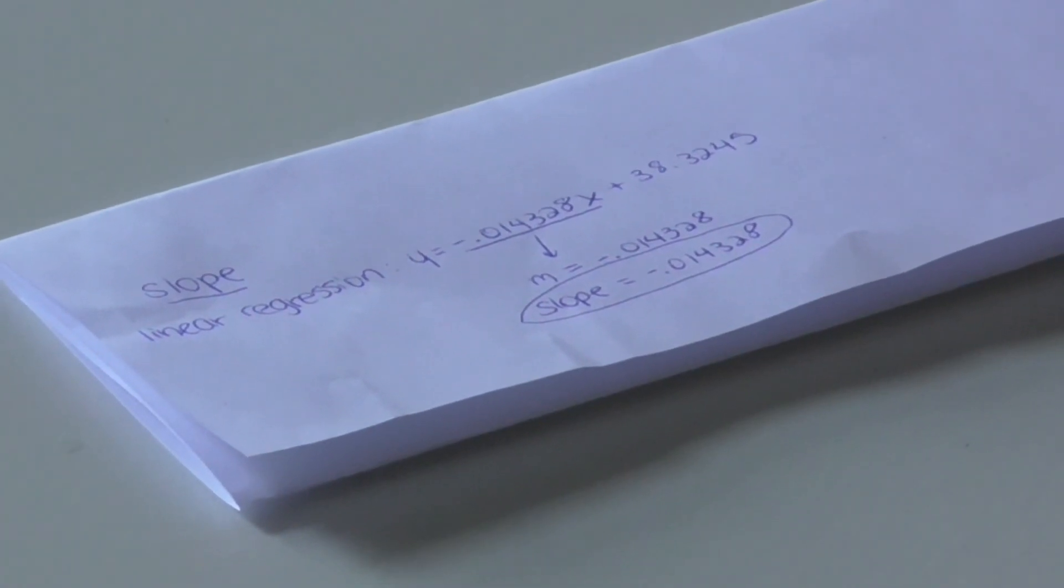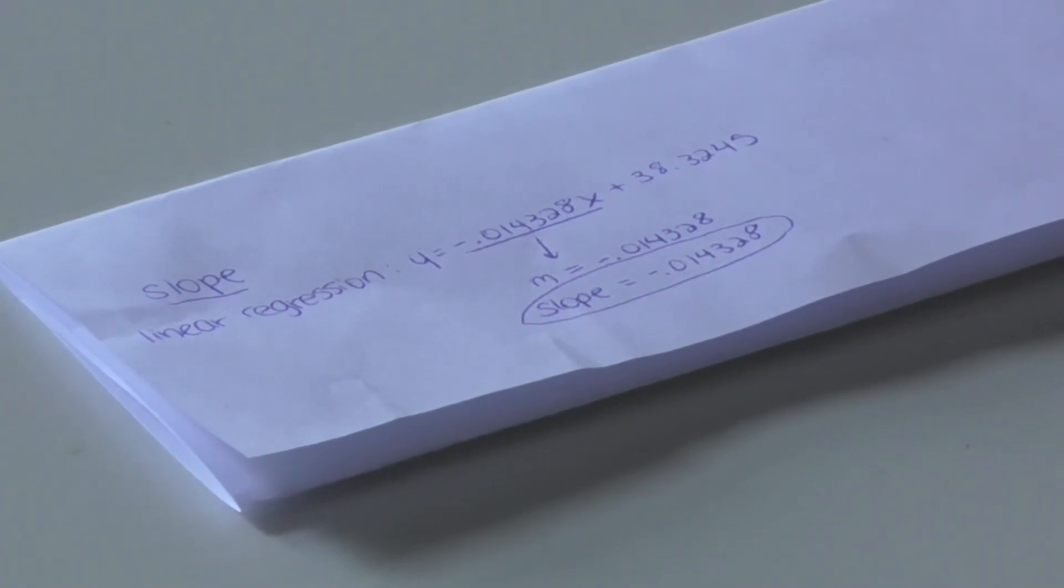As we see in our linear regression equation, our slope is negative 0.014328. This means that each year runners are shaving off about 0.015 seconds off the previous time.